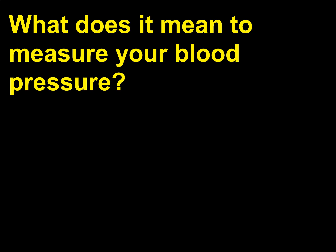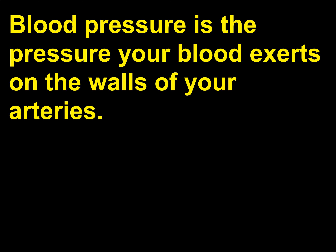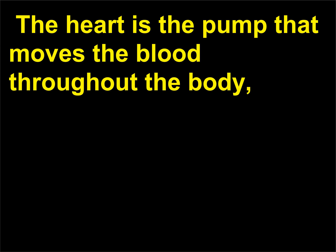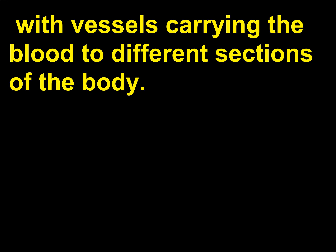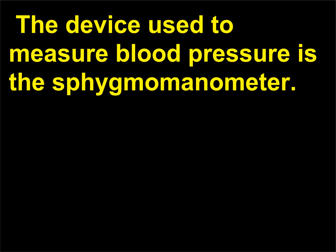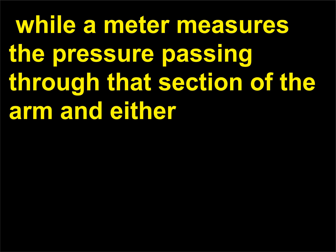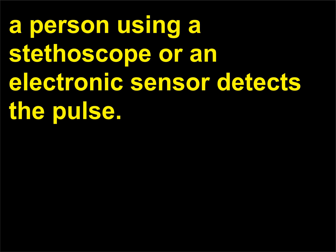What does it mean to measure your blood pressure? Blood pressure is the pressure your blood exerts on the walls of your arteries. The fluid dynamics of blood play a major role in blood pressure. The heart is the pump that moves the blood throughout the body, with vessels carrying blood to different sections. The device used to measure blood pressure is the sphygmomanometer. It is placed around the upper arm, inflated, and then deflated, while a meter measures the pressure and either a person using a stethoscope or an electronic sensor detects the pulse.